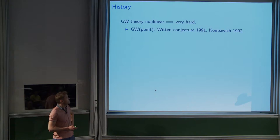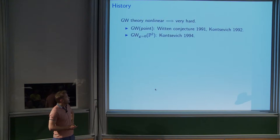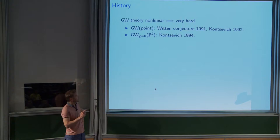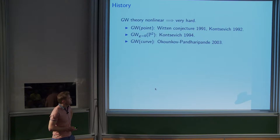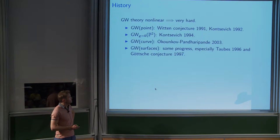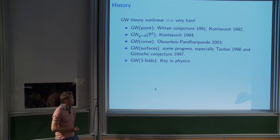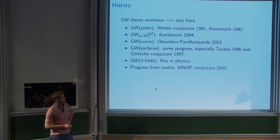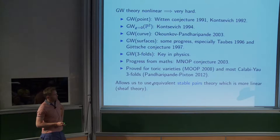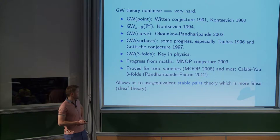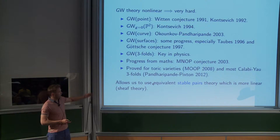In particular, you need two Fields Medalists to sort it out just for a point — the theory of mapping curves to a point. It was also worked out by Maxim for P2 just in genus zero, which is somewhat more linear. It's since been worked out for a curve, so we now know how many curves there are in a curve by Kontsevich-Pandharipande. There's some understanding of surfaces, but what we really want to understand is Gromov-Witten theory of threefolds.